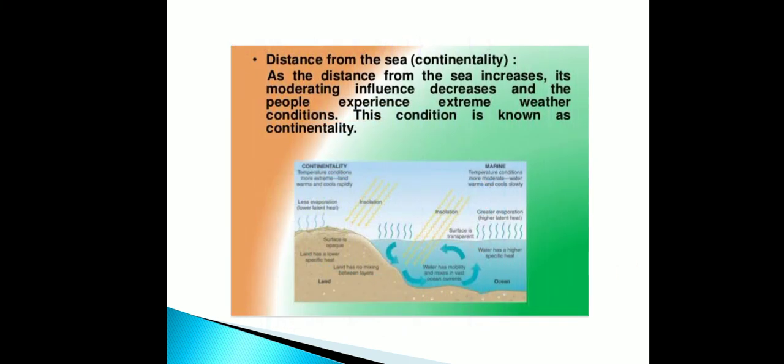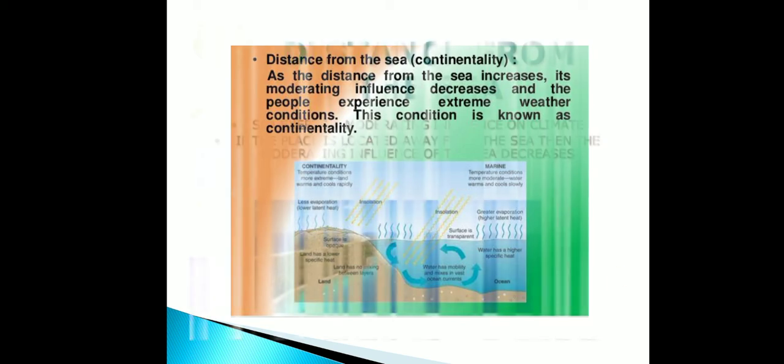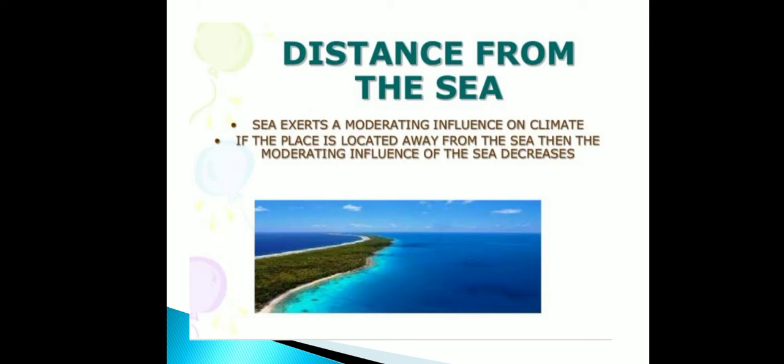As the distance from the sea increases, its moderating influence decreases and people experience extreme weather conditions. This condition is known as continentality. The sea exerts a moderating influence on climate; if a place is located away from the sea, the moderating influence of the sea decreases.